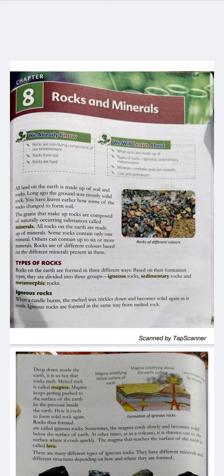The grains that make up rocks are composed of a naturally occurring substance called minerals. All the rocks on the earth are made up of minerals — whatever rocks the earth is made of, they are made of minerals.